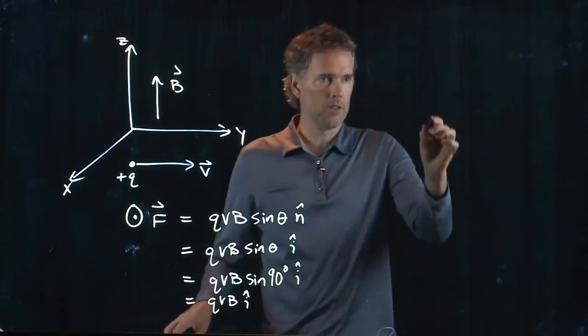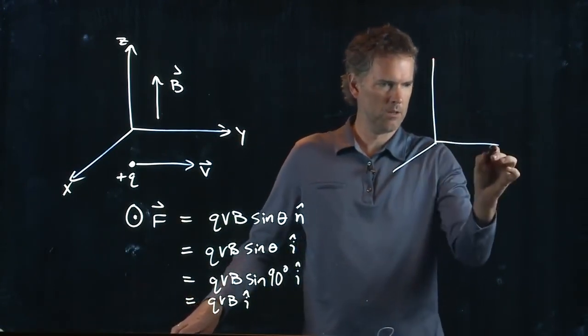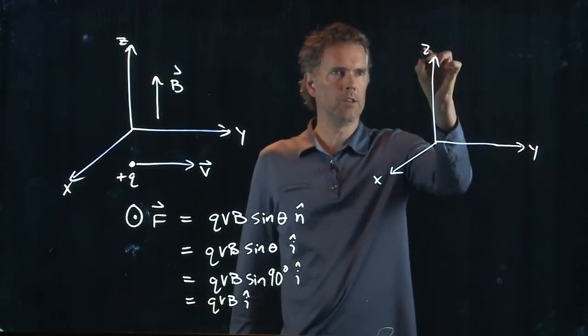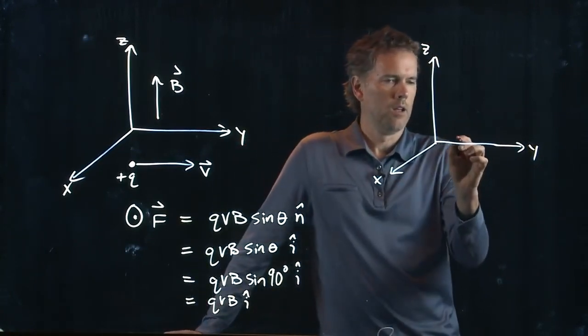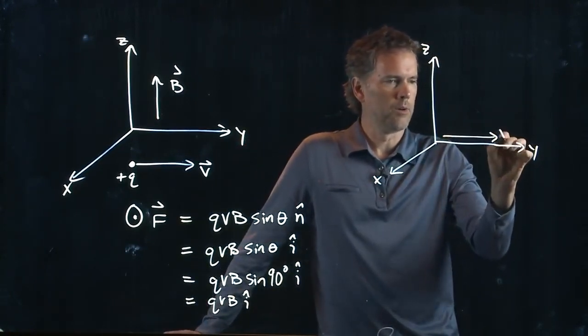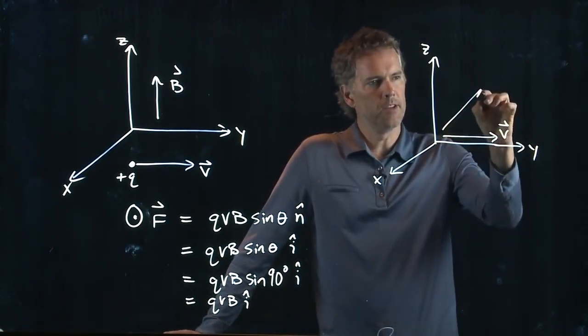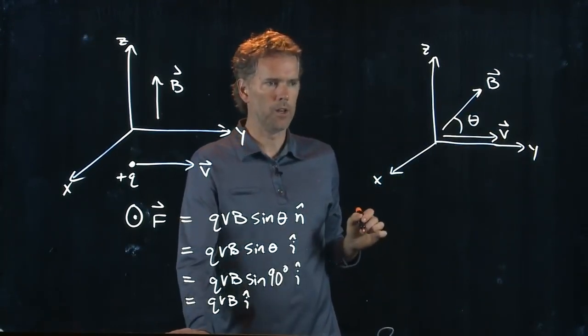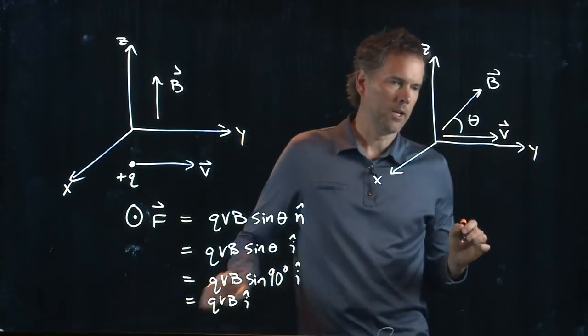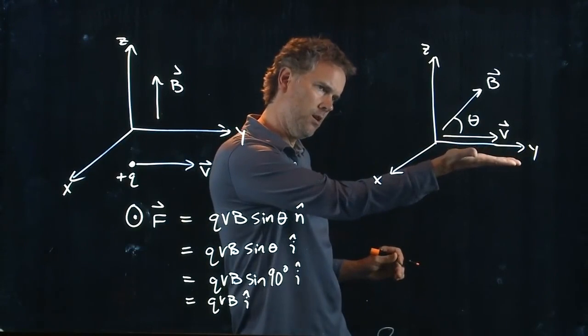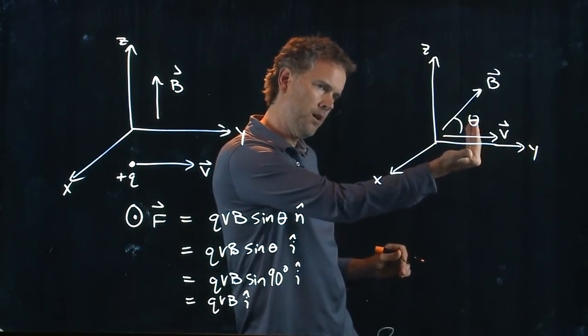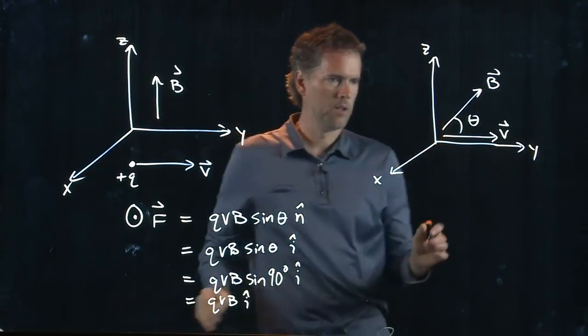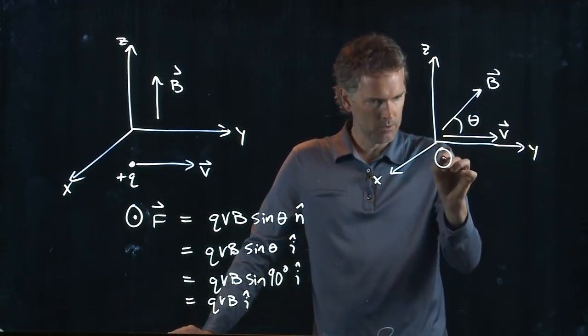So if you are in some other arbitrary direction, then you have to include that theta. So if this is x, y, z, and let's say that our particle is going to the right, but now our B field is up here at some angle theta. Now, what is the direction of the force? Well, again, we use our right hand. So we do a Q, V cross B, and that tells me that it's coming out towards you, right? Just like we had here. It's still coming out towards you.